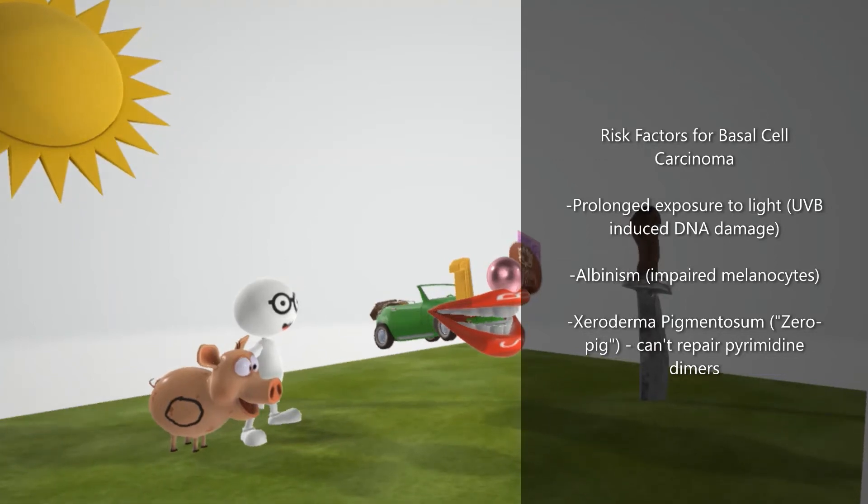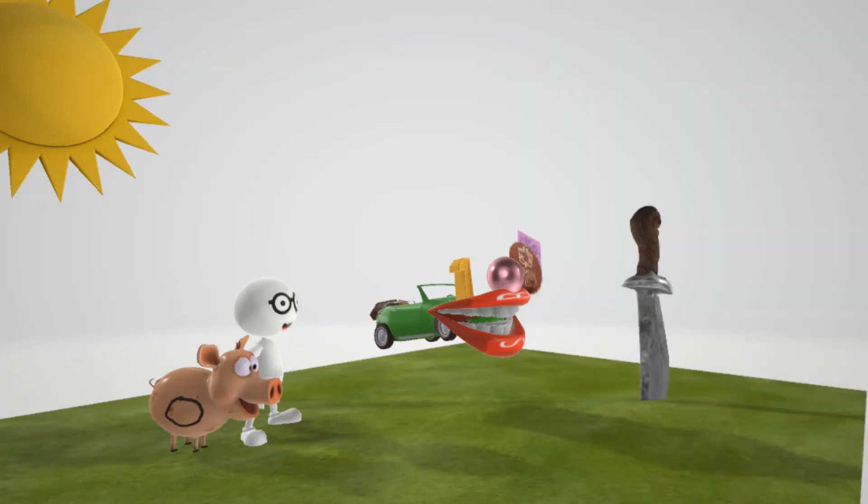You might have noticed the albino guy over here to help us remember that albinism is also a risk factor. They have impaired melanin production and are more susceptible to DNA damage. We have this pig here with the zero sign to remember xeroderma pigmentosum, in which the body cannot repair pyrimidine dimers, and this leads to damage.